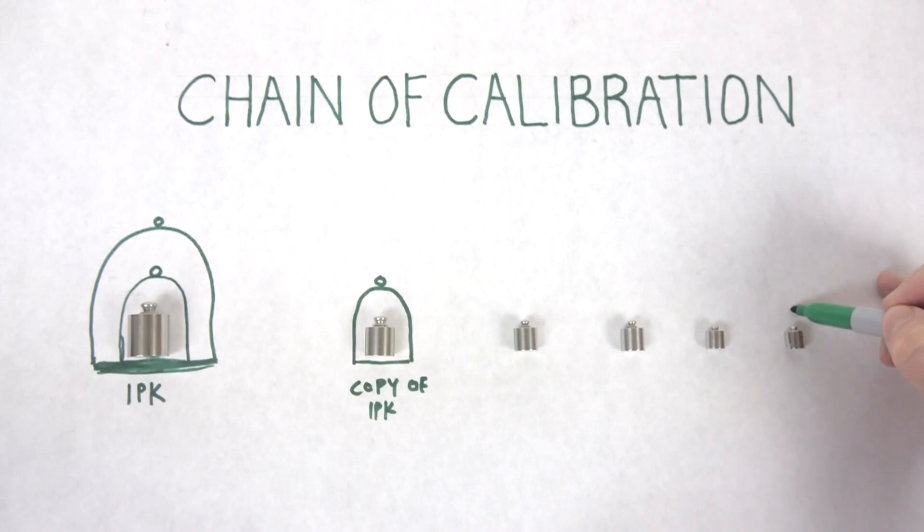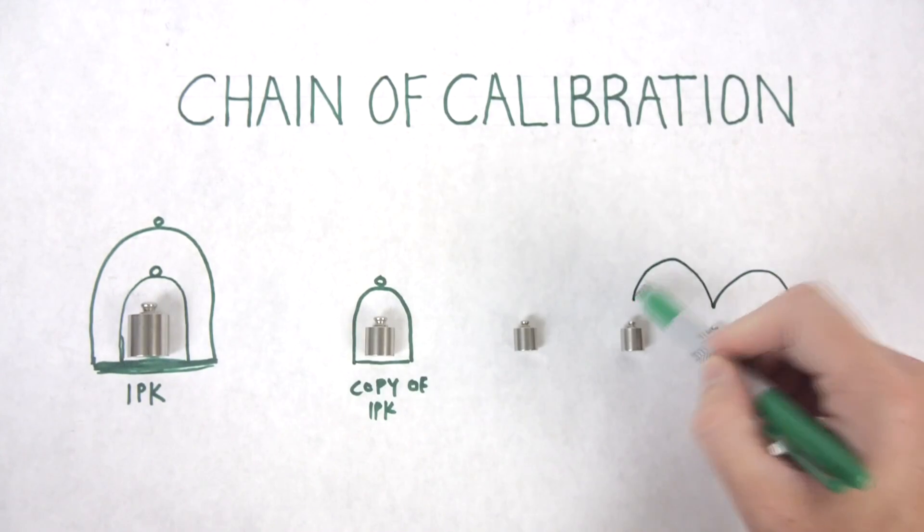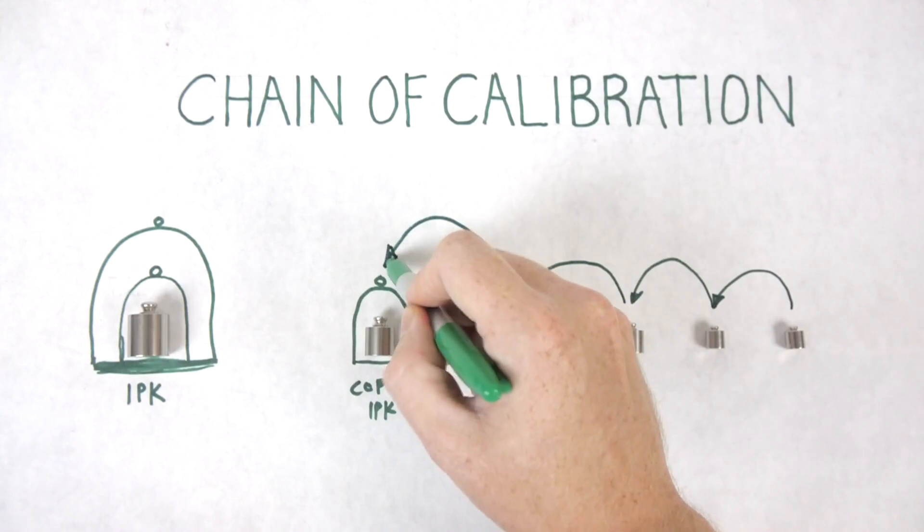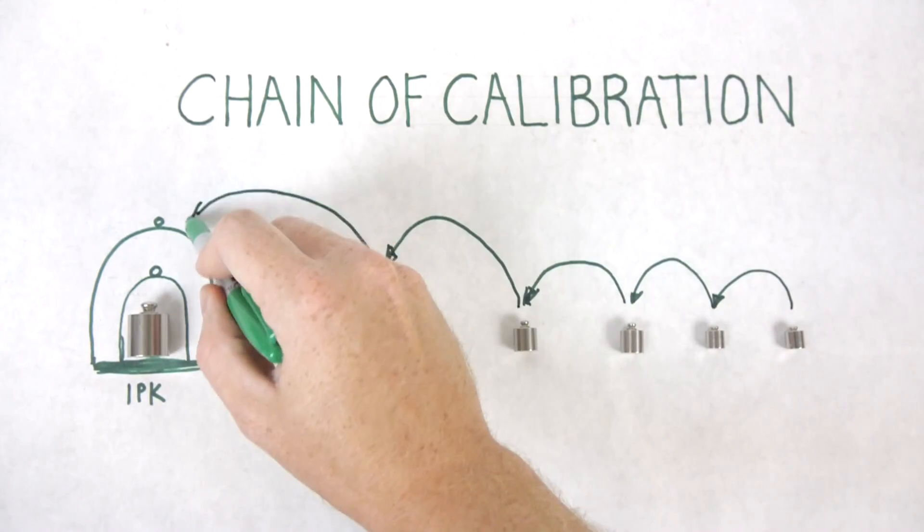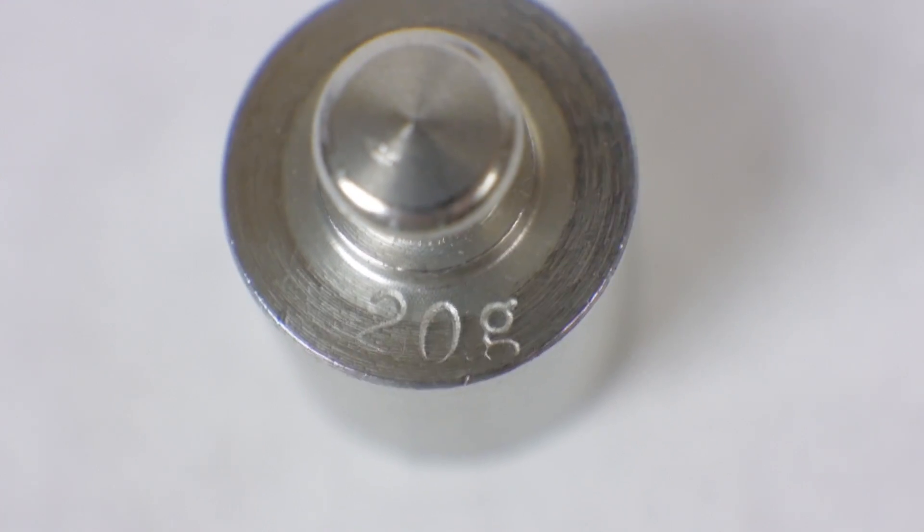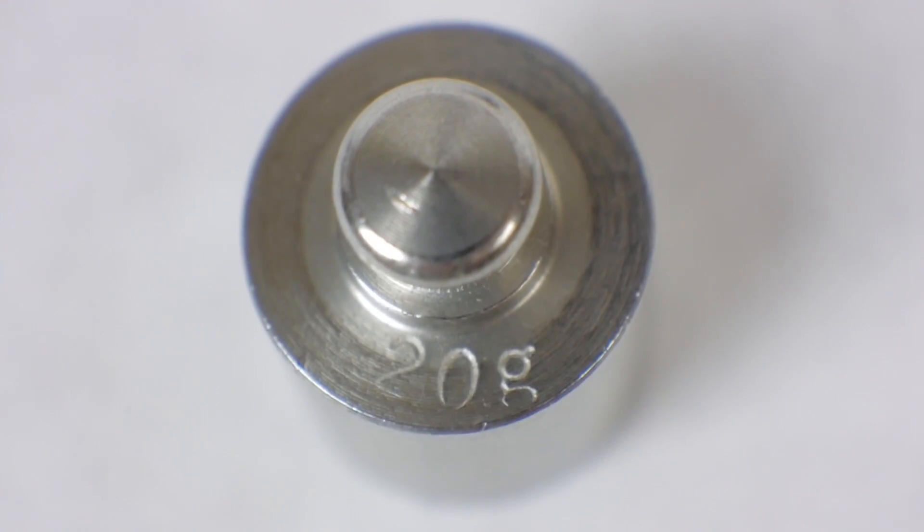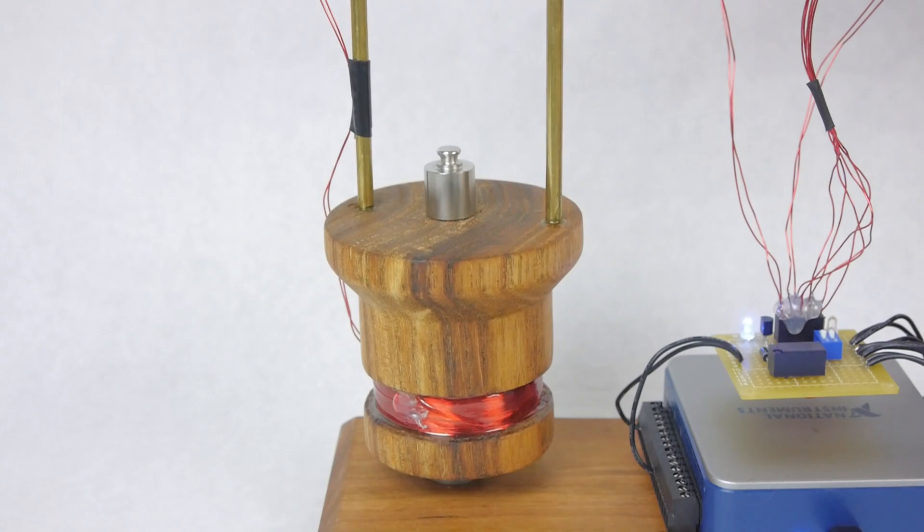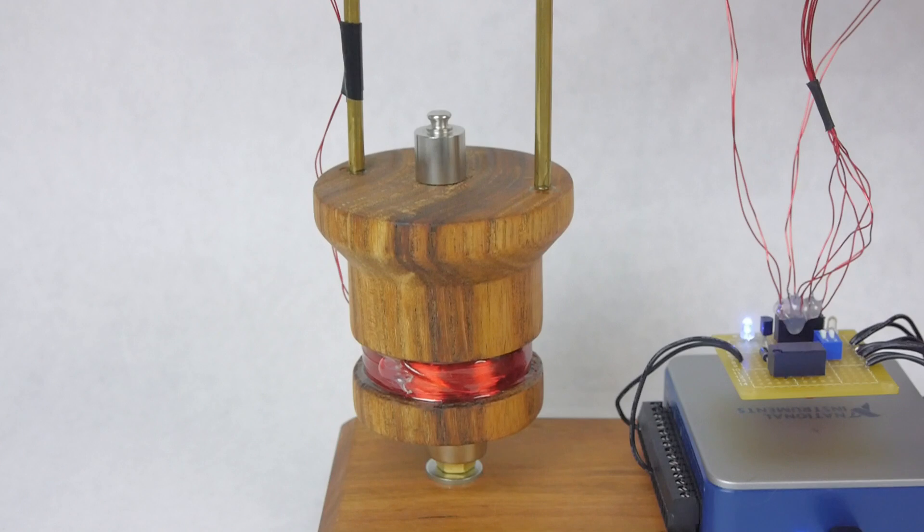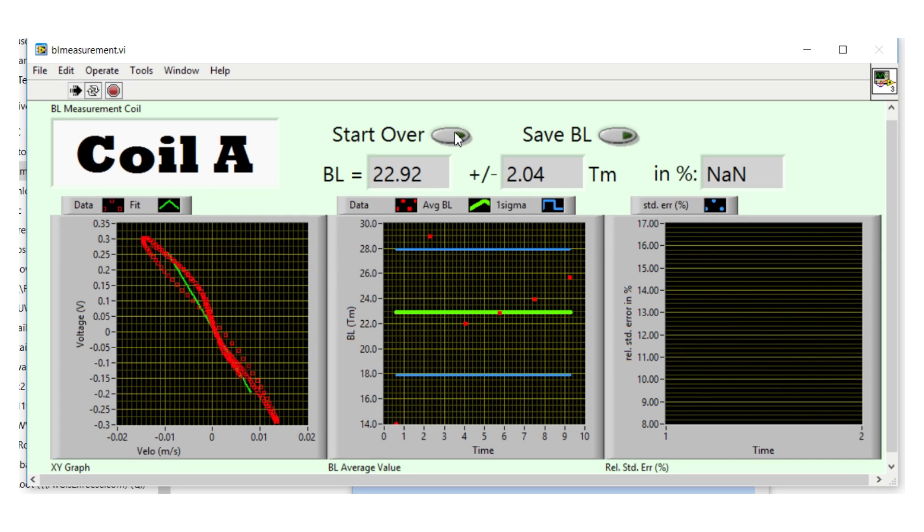Traditionally, an instrument that measures mass would be calibrated using known artifacts that themselves were calibrated using known artifacts, and so on and so on in a chain all the way back to the IPK. But I didn't do any of that. I know this mass is about 20 grams because it says so right on top, but if I didn't know that, and had nothing to compare it to, I could still get an accurate measurement out of the watt balance.